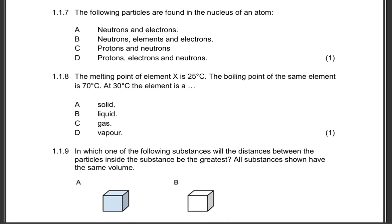Question 1.1.7: The following particles are found in the nucleus of an atom. Is it neutrons and electrons, neutrons, elements, and electrons, protons and neutrons, or protons, electrons, and neutrons? In the nucleus, we find protons and neutrons. So the correct option is C.